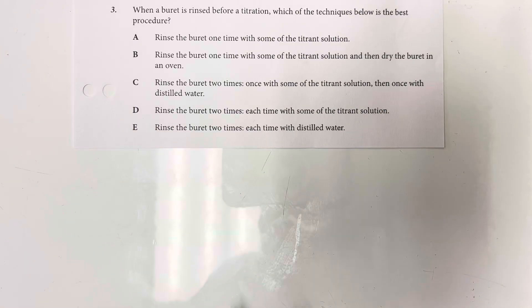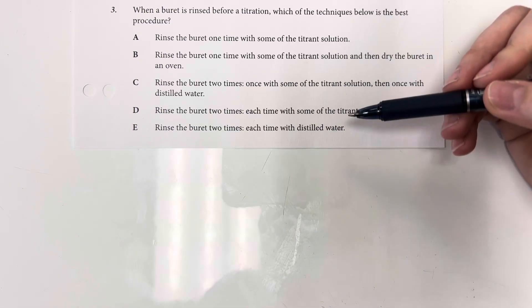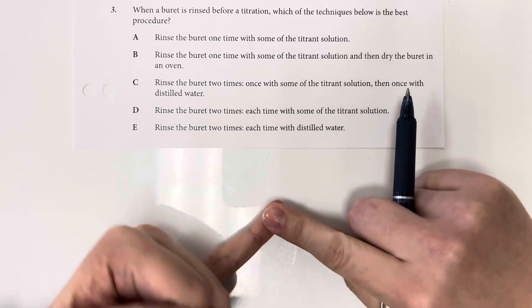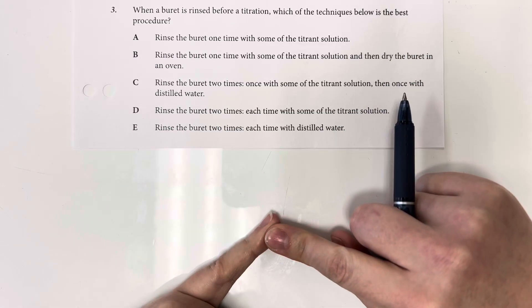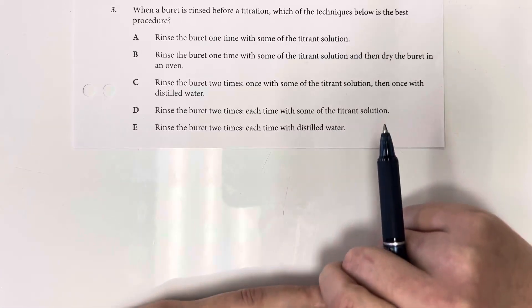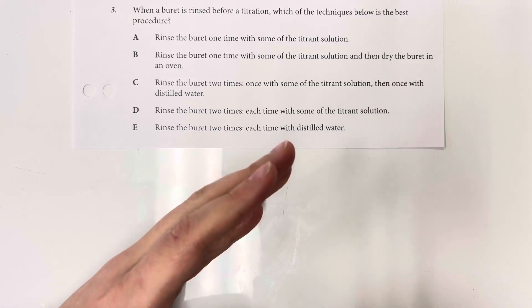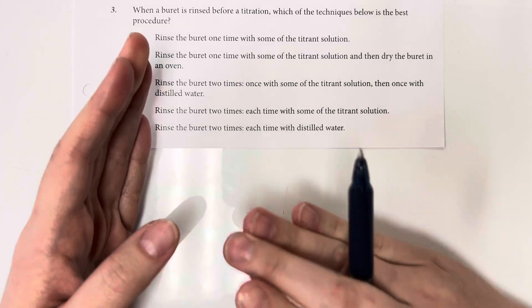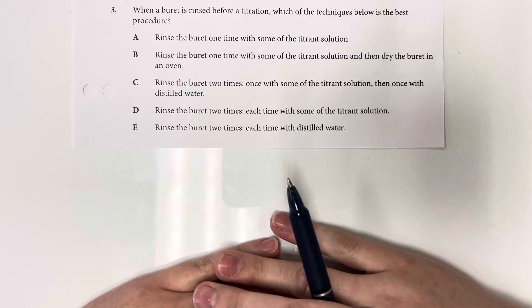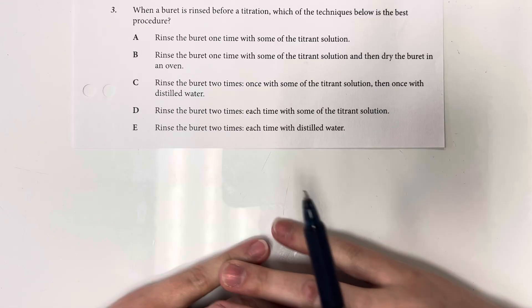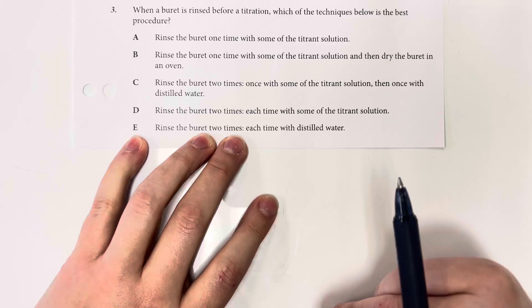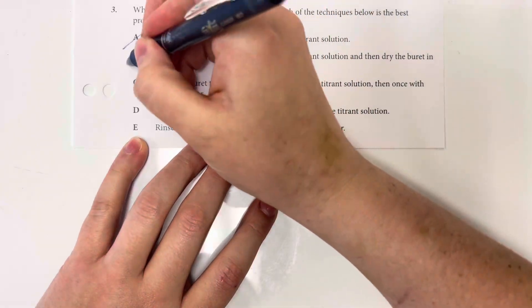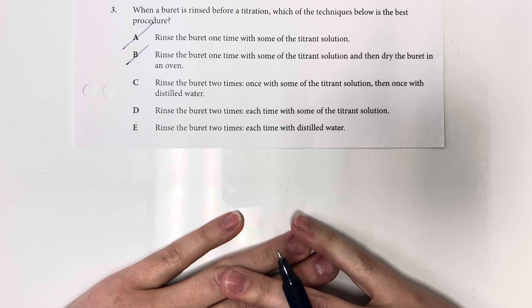When a burette is rinsed before titration, which of the following techniques is best for the procedure? So when you rinse the burette, you are wanting to clean out the burette from anything that you had before, and then also to make sure that any leftover solution that is in the burette is what you are going to be titrating with, so that you do not affect the molarity of what you are titrating with. So I'm going to look that I am going to rinse the burette at least twice, so that eliminates option choice A and B.